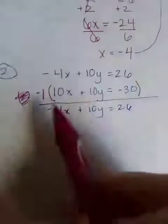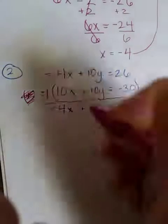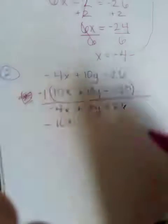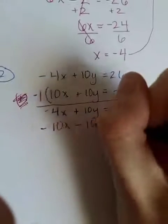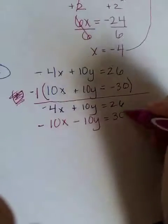Then I'm going to rewrite my second equation with the negative 1 distributed in. So negative 1 times 10x is negative 10x. Negative 1 times 10y is negative 10y. Negative 1 times negative 30 is 30.